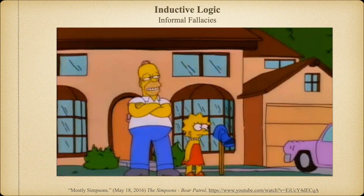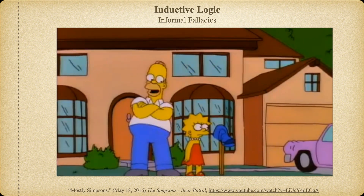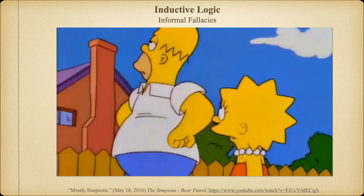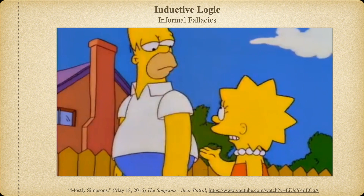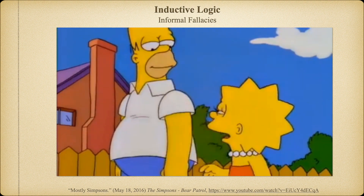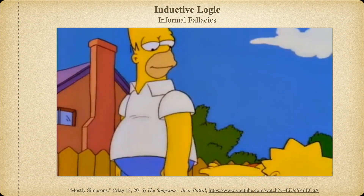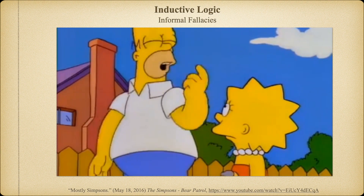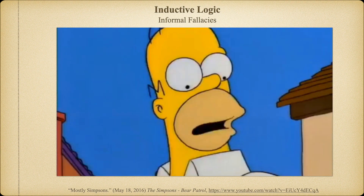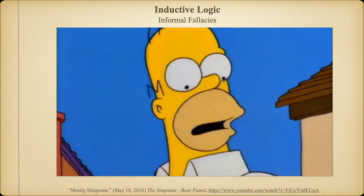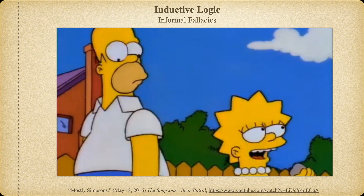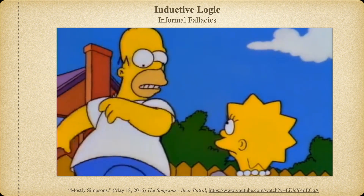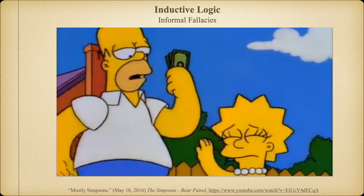In this Simpsons clip, Homer declares 'Not a bear in sight — the bear patrol must be working like a charm.' Lisa points out: 'That's specious reasoning, Dad. By your logic, I can claim that this rock keeps tigers away.' Homer asks how it works, and Lisa replies 'It doesn't work — it's just a stupid rock.' But Homer responds 'I don't see any tigers around here, do you?' and then offers to buy her rock. This is a perfect example of post-hoc reasoning — mistaking the absence of an effect for proof that a cause is working.